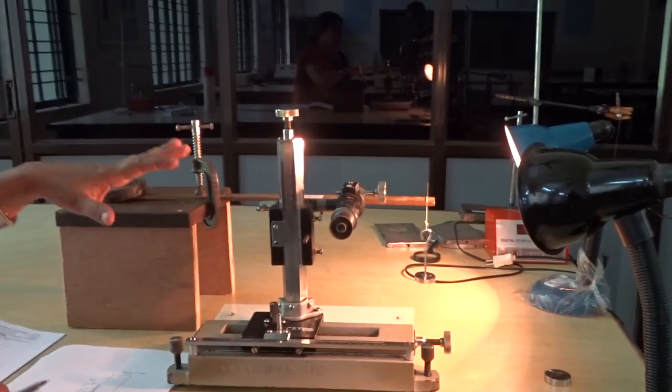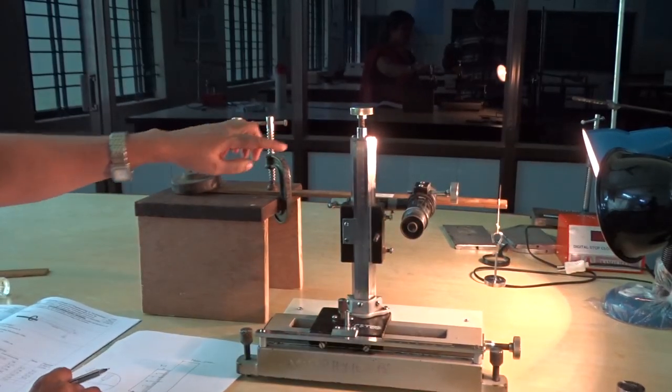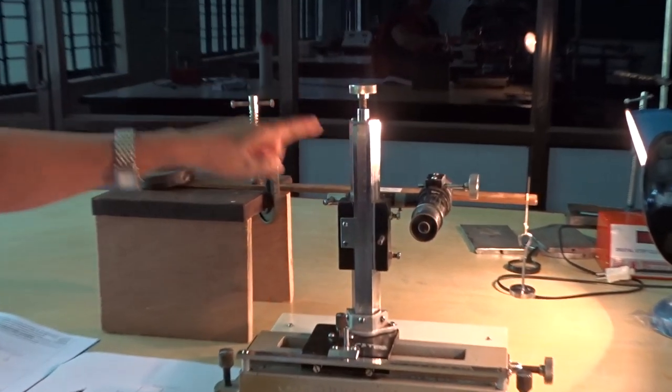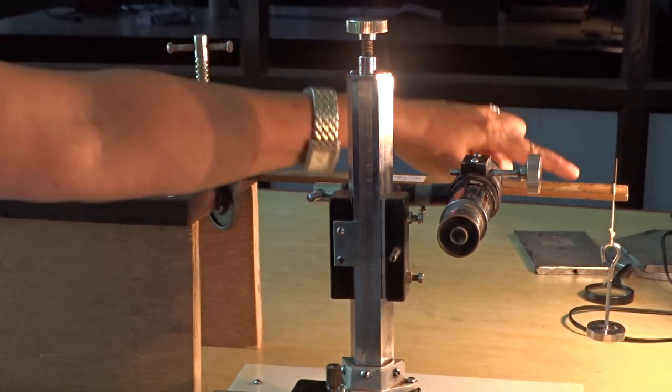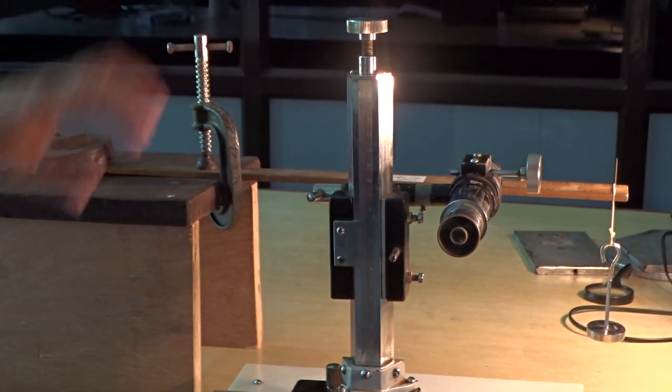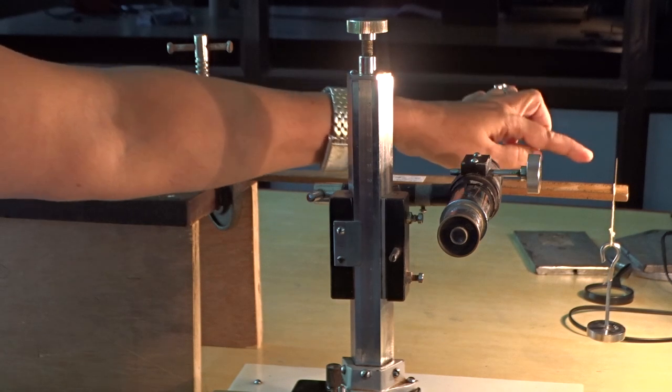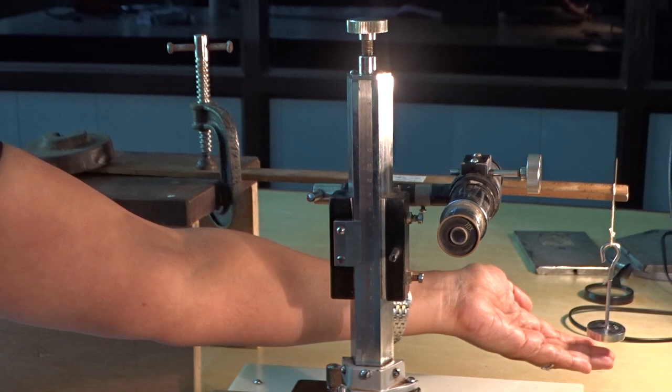These are the parts of that experiment. Here we have taken one G-clamp and beam is this wooden scale, and wooden scale is fixed at one end, another end is free. And now this wooden scale is called as cantilever pin. And another free end is fixed to one pin as well as one weight hanger.